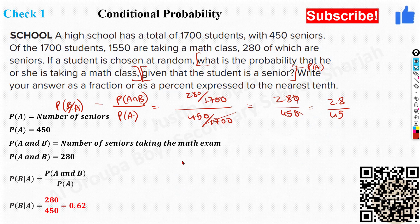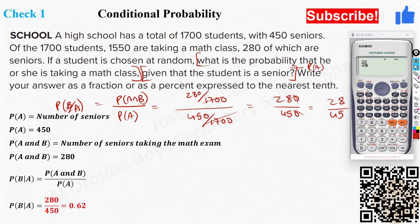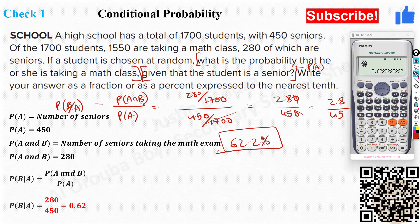That is the conditional probability. They asked for the answer to the nearest tenth in percent, so we use a calculator: 280 ÷ 450 = 62.222..., which rounded to the nearest tenth is 62.2%. This is the final answer.